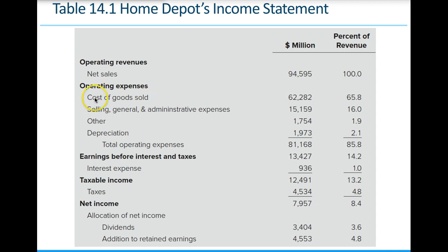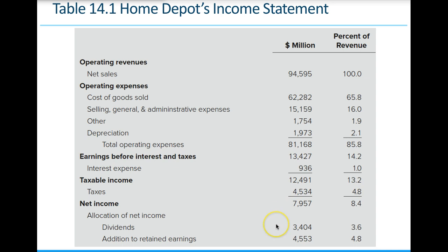Operating expenses include the cost of goods sold — materials and labor to make products — and SG&A expense, which covers finance, sales, marketing, human resources, and administrative expenses to run the company. Other expenses include depreciation. Total operating expenses are deducted from income to give you EBIT — earnings before interest and tax — also called operating income. Subtracting interest expense gives taxable income; subtracting taxes gives net income, which can only be used two ways: paid out as dividends or added to retained earnings.